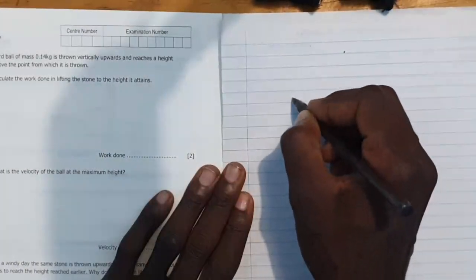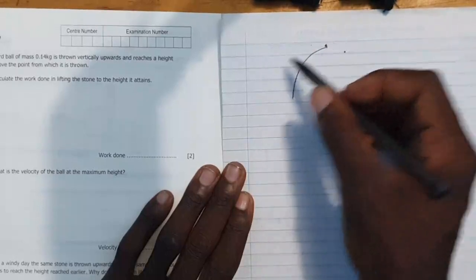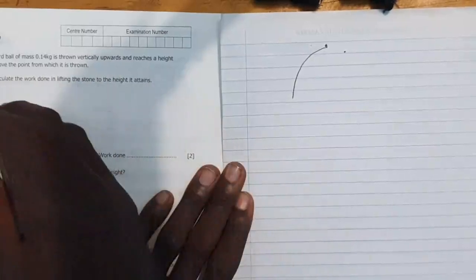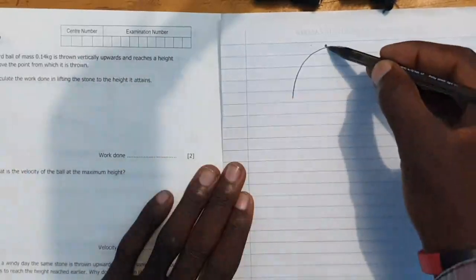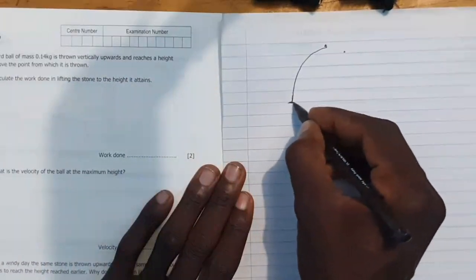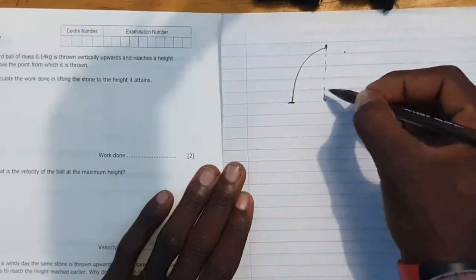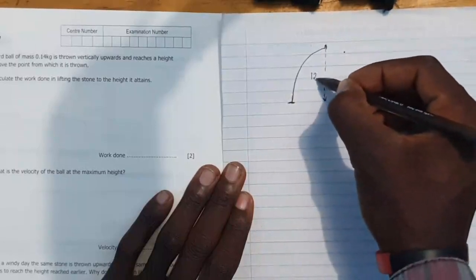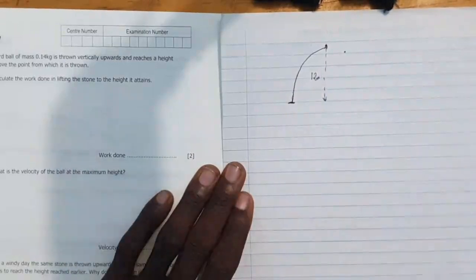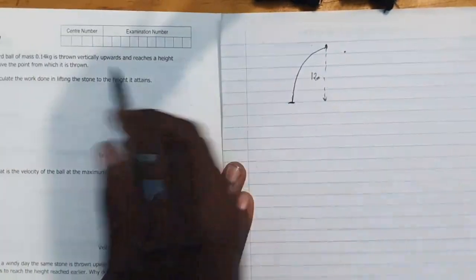So this ball is thrown up to somewhere, that's a height, that's the highest point, upward and reaches a height of 12 meters above the point where it was thrown. So this is the point, from there to there they are saying 12 meters.